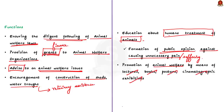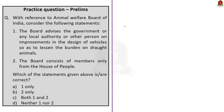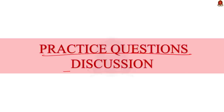The board also promotes animal welfare by means of lectures, books, posters, and cinematographic exhibitions. With this we have come to the end of this article discussion. We saw about Animal Welfare Board of India — its establishment, composition, term of office, and some of the important functions and roles. With these points, let us move on to the practice prelims question discussion.